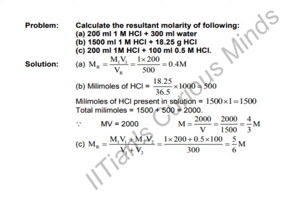Hello friends, let us solve this problem: calculate the resultant molarity of the following. First is 200 ml 1 molar HCl plus 300 ml water. The concentration given is 1 molar HCl with 200 ml, and we are adding 300 ml water.